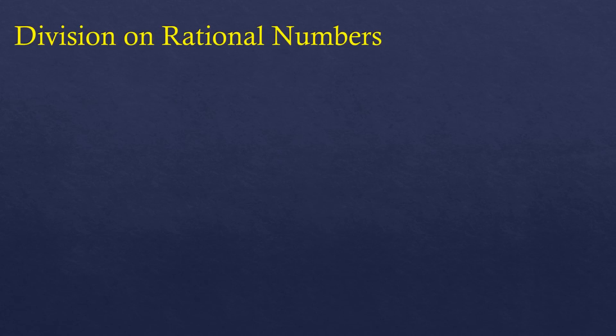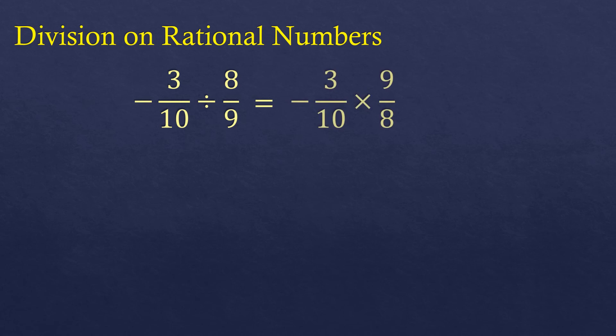Next is division of rational numbers. For example, negative three-tenths divided by eight-ninths. We change the division operation to multiplication and take the reciprocal of the number on the right — eight-ninths becomes nine-eighths. Then multiply directly: three times nine is 27, and ten times eight is 80. Since it cannot be reduced, the final answer is negative 27 over 80.